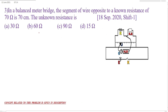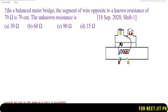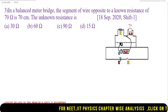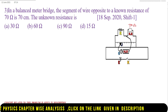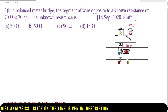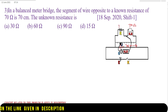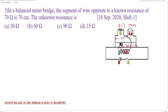Now let us go to our next question. In a balanced meter bridge, the segment of wire opposite to the known resistance of 70 ohm is 70 centimeters. The unknown resistance is? In this meter bridge, we take the known resistance of 70 ohm, and the balancing length opposite to the known resistance is 70 centimeters. The total length of this wire is 100 centimeters. If this entire wire is 100 centimeters and this part is 70 centimeters, then the other part will be 30 centimeters.